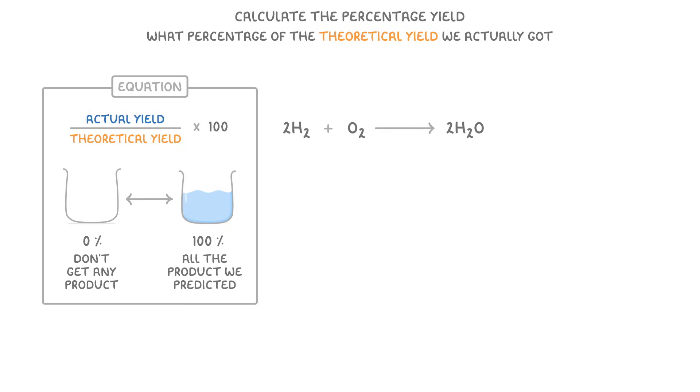So if we think back to our reaction from the start of the video, where we reacted 2g of hydrogen with 16g of oxygen, we predicted that our theoretical yield would be 18g. But we said that our actual yield was only 15g.